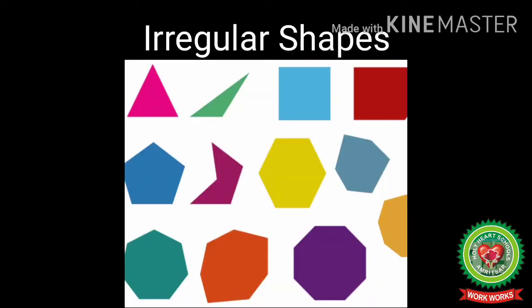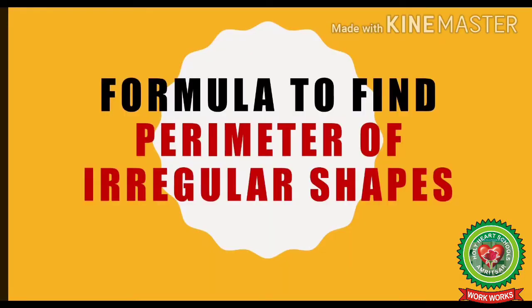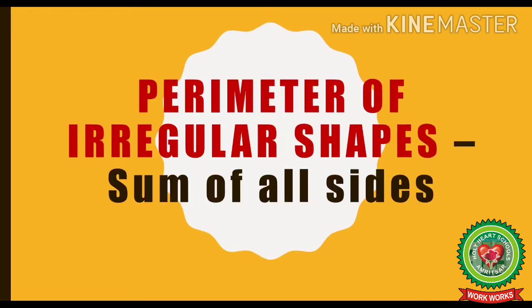Now, let us understand how to find out the perimeter of irregular shapes. Let us first know the formula to find the perimeter of irregular shapes. Perimeter is equal to sum of all sides.